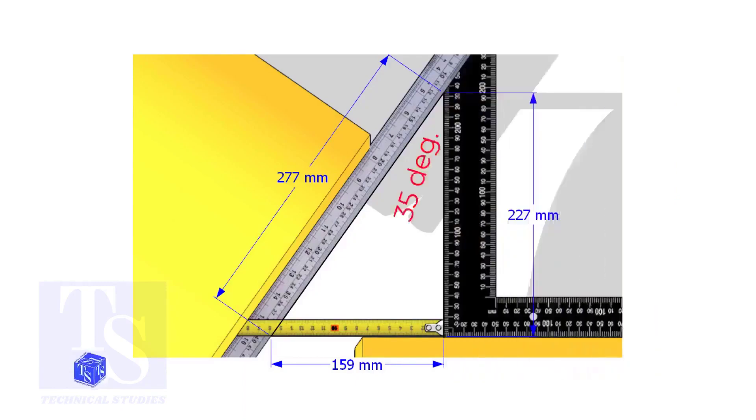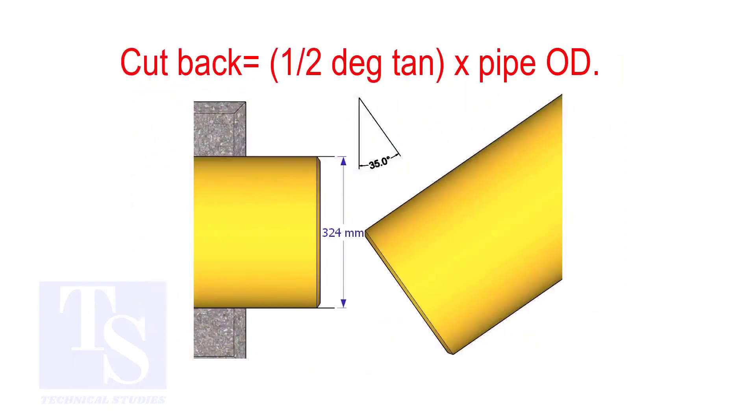So the answer is 35 degrees. How to calculate the cutback of a single cut miter? When it is a single cut, the cutback is half degree tan multiplied by the OD of the pipe.